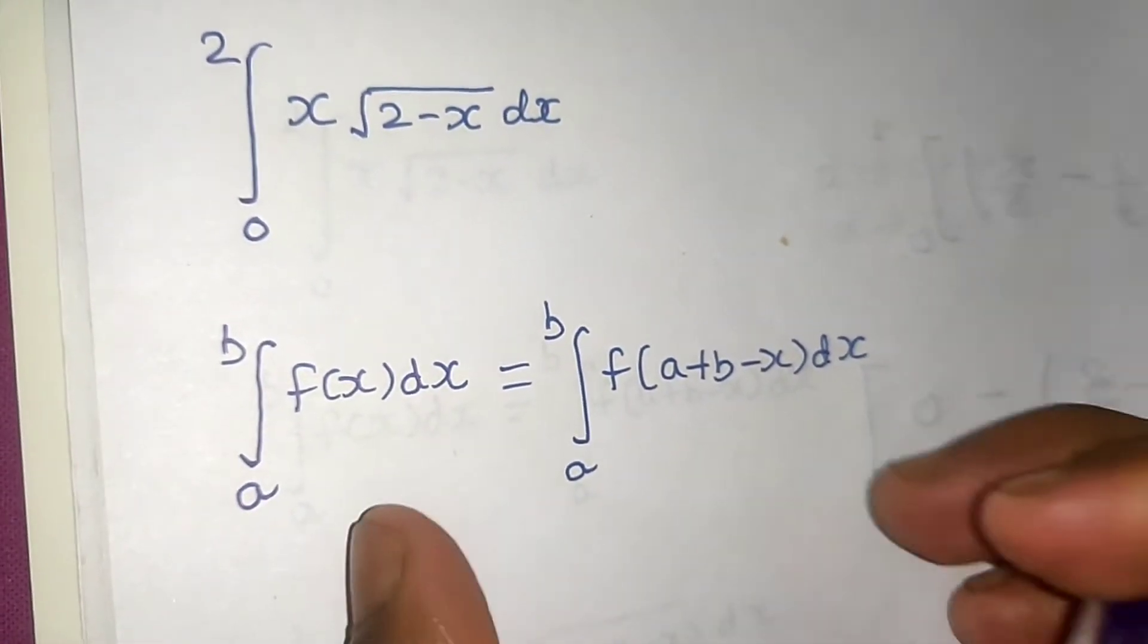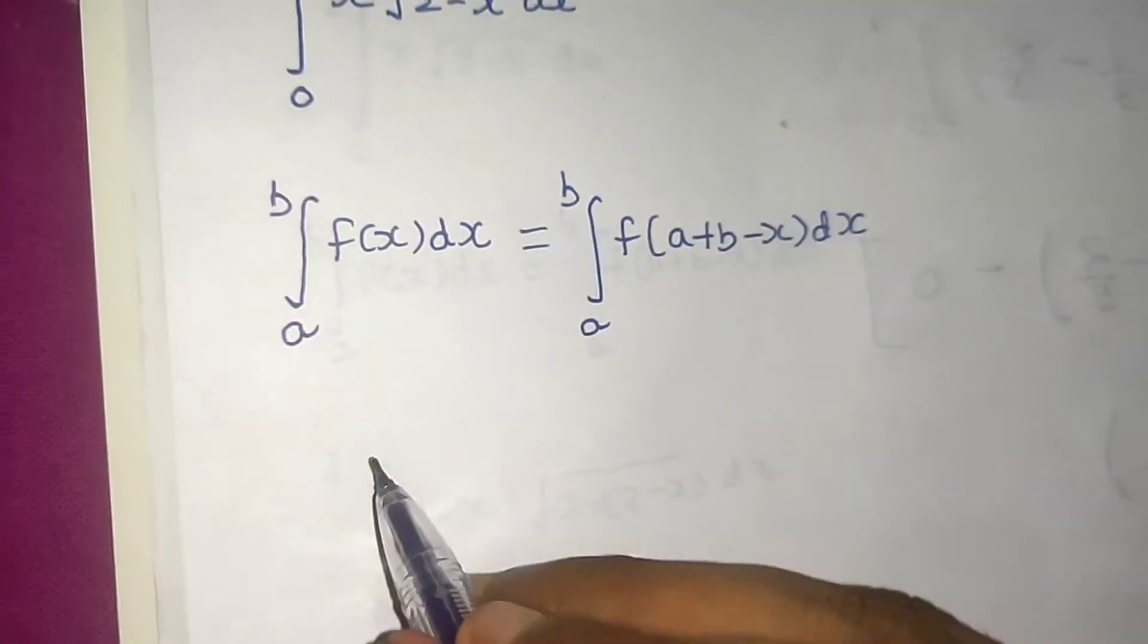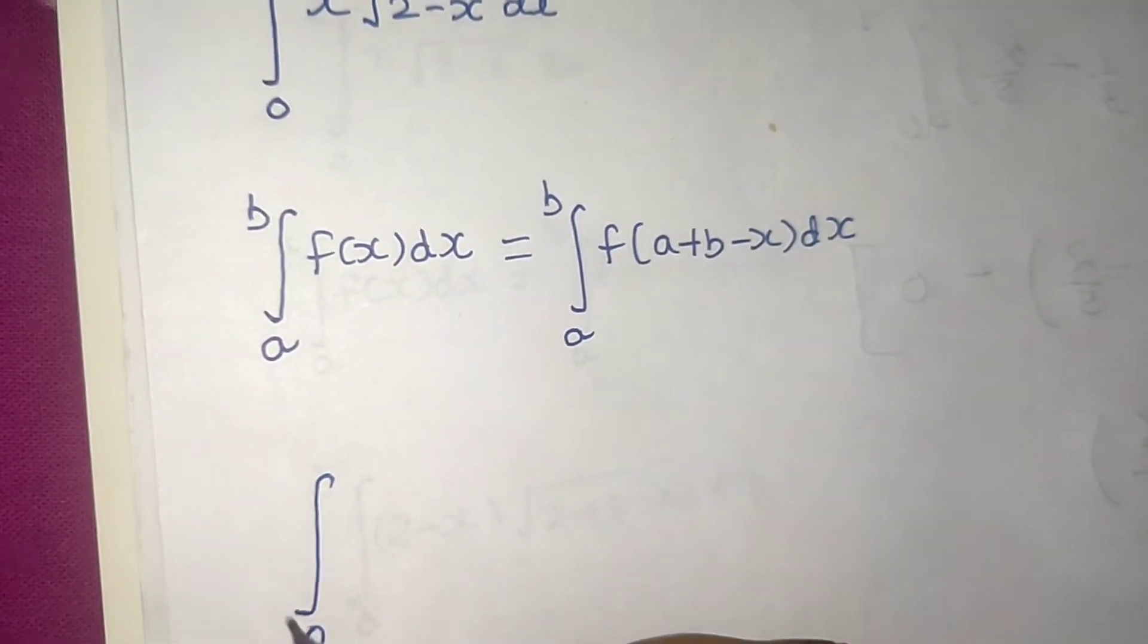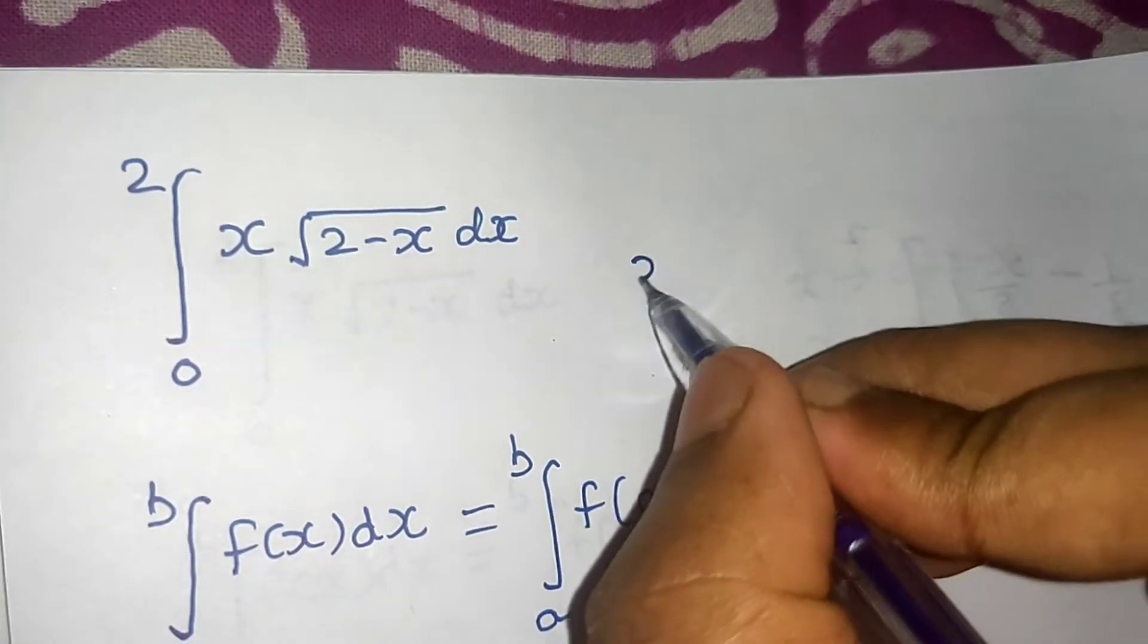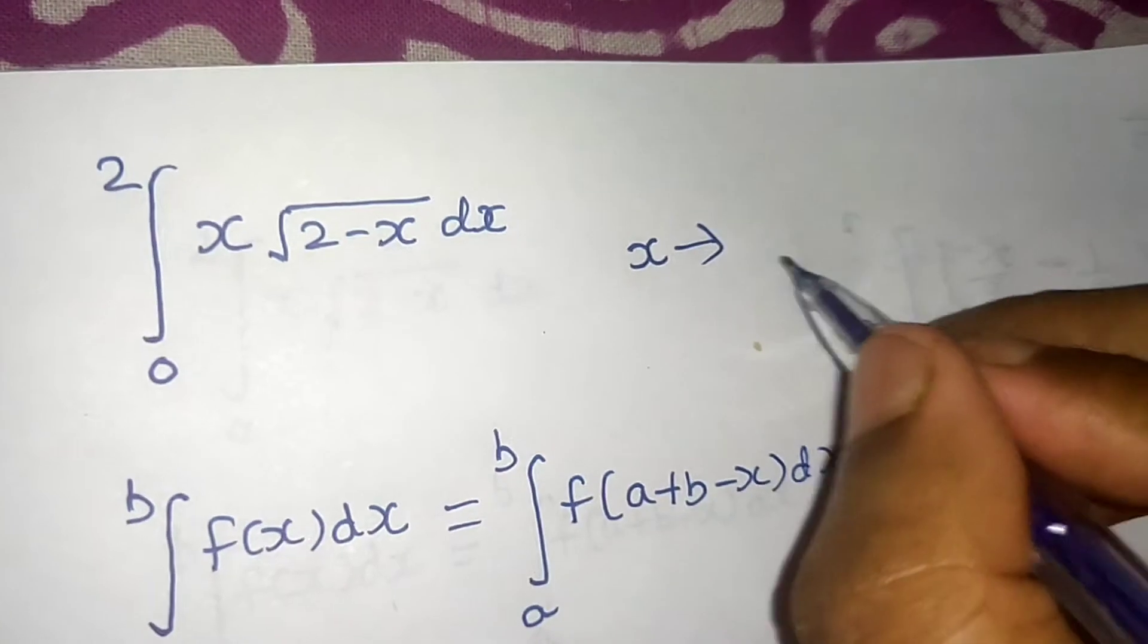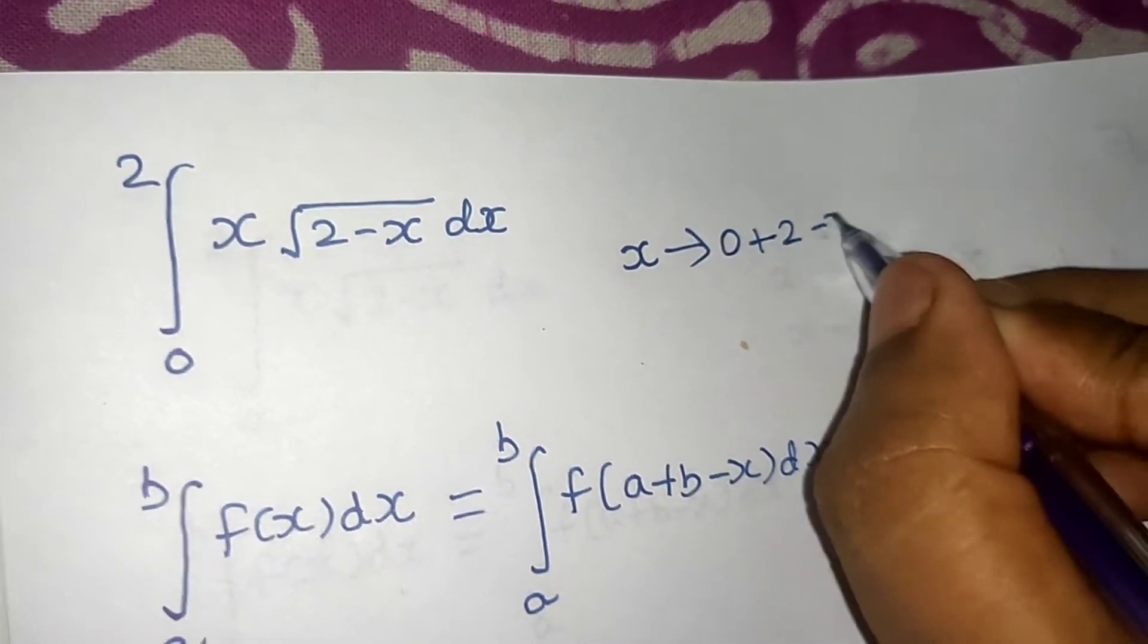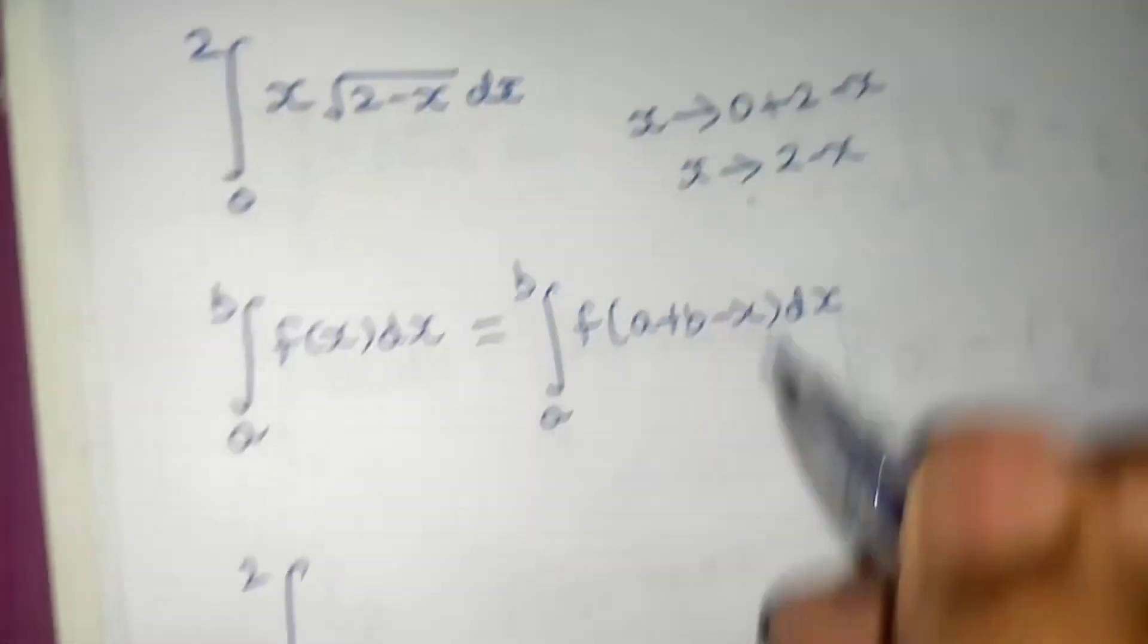So if I use the same property, I can rewrite this integral as 0 to 2. I will just replace this x which I have by this, that is 0 lower limit plus upper limit minus x. That is I will have to replace x by 2 minus x.